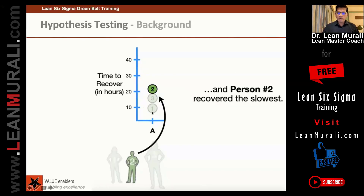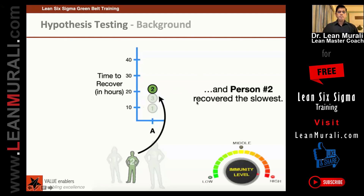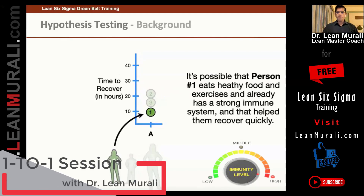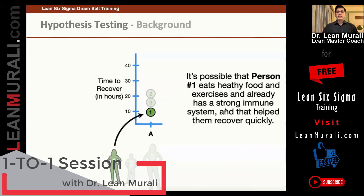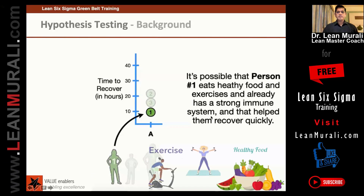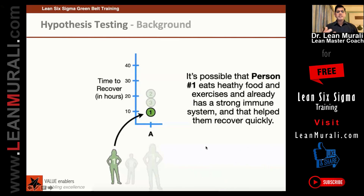Why do you think person 1 recovers fast and person 2 recovers slowly? His immunity level might be better — probably eats good food. It is possible that person 1 eats healthy food, exercises, and already has a strong immune system, and that has helped them recover quickly. There can be other reasons also. And why has person 2 not recovered as quickly? It's the opposite — naturally.